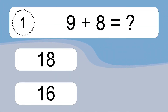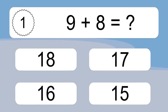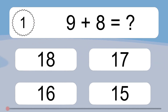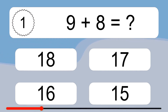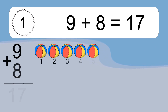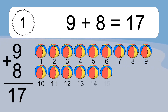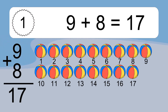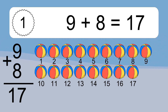9 plus 8 equals what? 9 plus 8 equals 17. Let's count it: 1, 2, 3, 4, 5, 6, 7, 8, 9, 10, 11, 12, 13, 14, 15, 16, 17.